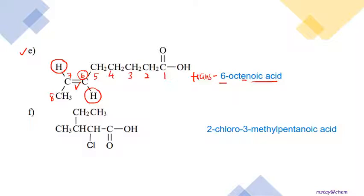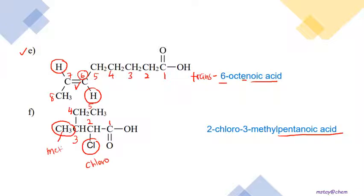For the last question, carbons one to three go straight, then we branch up to carbon four and five, giving pentanoic acid as the parent. Carbon two has a chloro substituent and carbon three has a methyl substituent. When naming, we use alphabetical order rather than numerical order, so C (chloro) comes before M (methyl): the name is 2-chloro-3-methylpentanoic acid, with hyphens between numbers and letters.